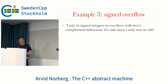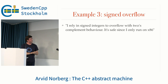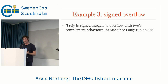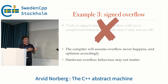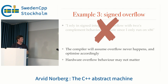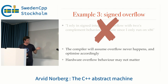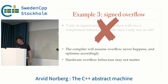Example 3: signed overflow — maybe my favorite. "I rely on signed integer overflow to have two's complement behavior. It's safe because I only run on x86." Again, the compiler defines signed overflow to be undefined behavior, so it will expect it to never happen. What your hardware does on overflow might not matter — your compiler may have already generated code under the assumption that it doesn't happen.